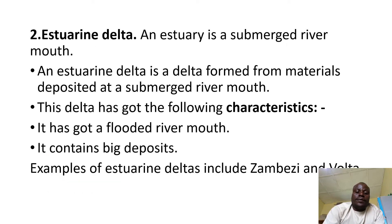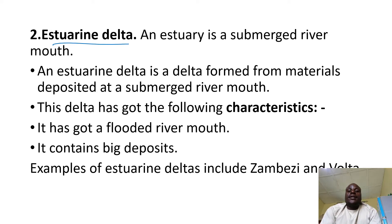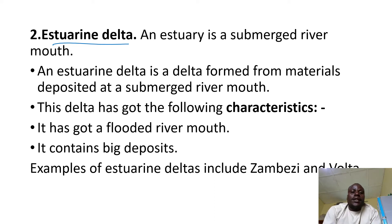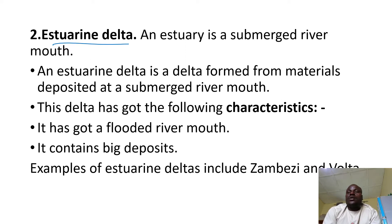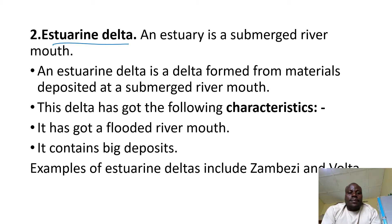Then we have the estuarine delta. This is a delta that looks like an estuary. When we were studying features that result from sea level rise, we talked about an estuary. An estuary is a flooded river mouth — a feature formed when the river mouth at the coast has been submerged. So this delta looks like an estuary.